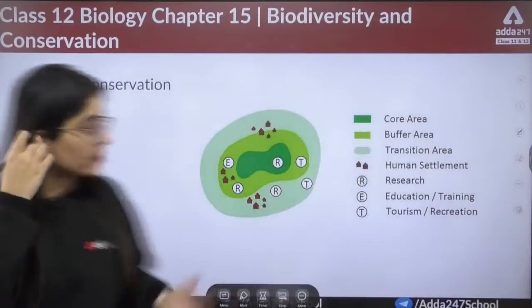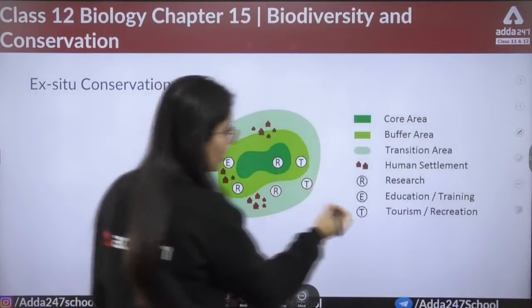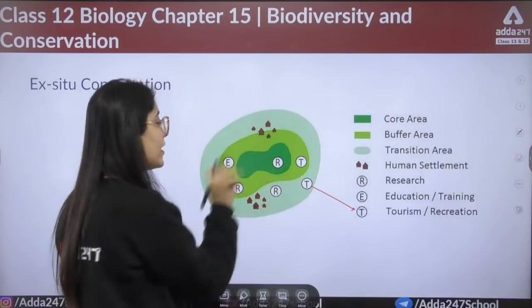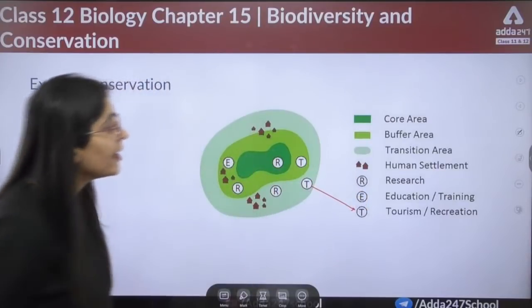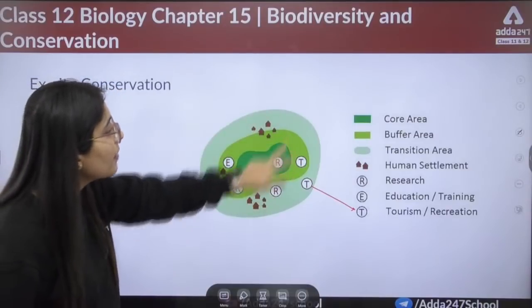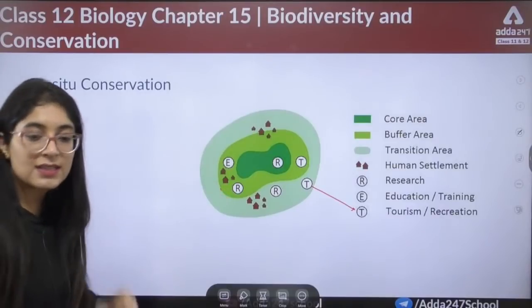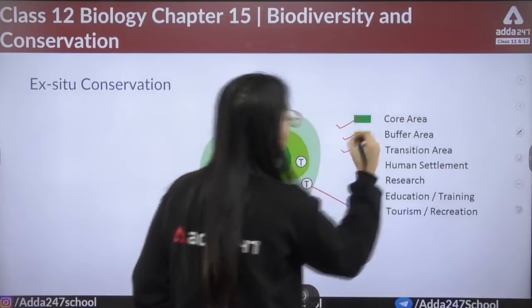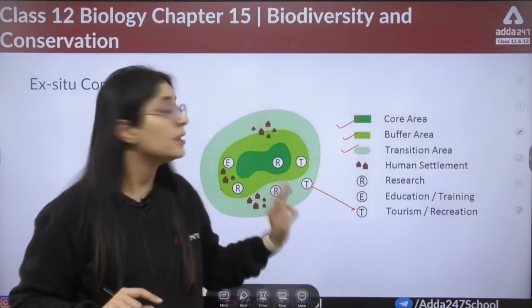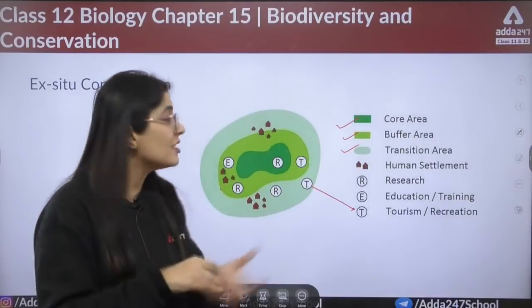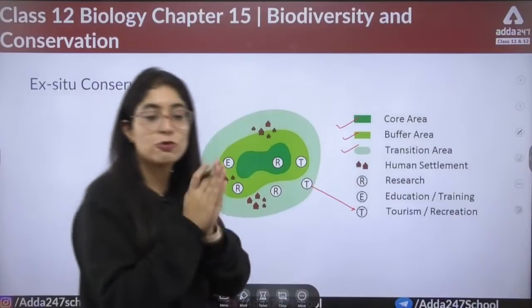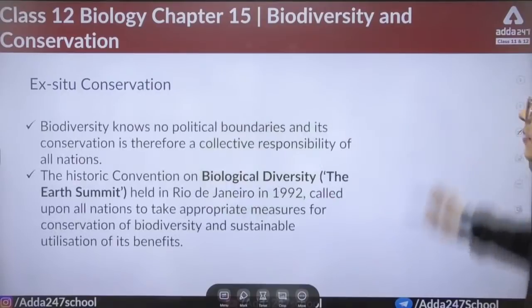In ex situ conservation areas, the space is used for tourism, recreation, and research. A biosphere reserve has three major zones: the core area, the buffer area, and the transition area. In the transition area, tourism is allowed. In the buffer area, limited tourism and human settlement may occur. The core area is strictly for wildlife and protected species, with only research permitted — human settlement is not allowed there.